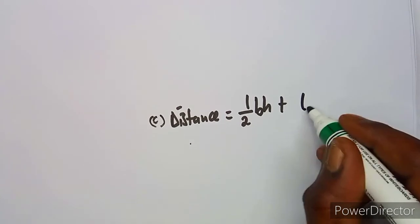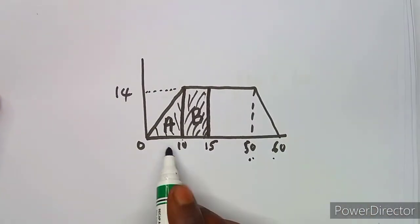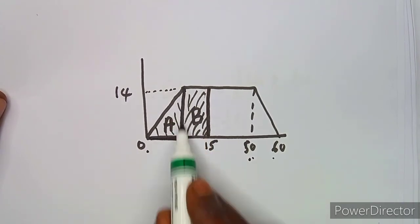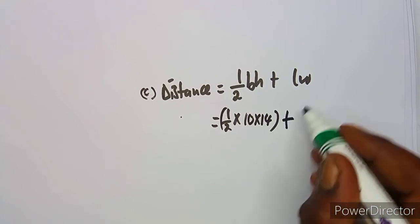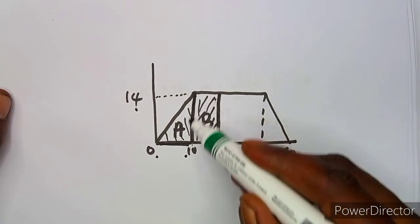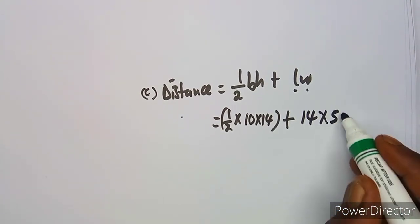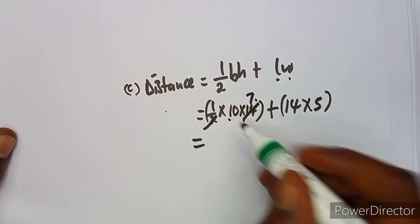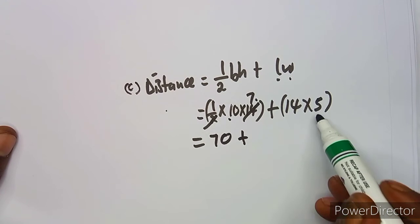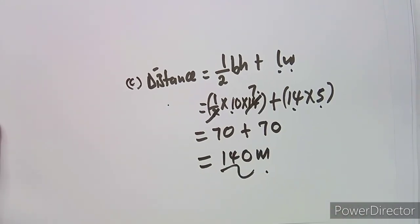Distance equals area of the triangle plus area of the rectangle. Triangle: half times base times height = half times 10 times 14. Rectangle: length times width = 14 times 5. Calculating: half of 10 is 5, times 14 gives 70. Plus 14 times 5 gives 70. So 70 plus 70 equals 140 meters. That is the distance traveled in the first 15 seconds.